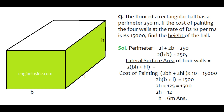In this question, the floor of a rectangular hall has a perimeter of 250 meter. If the cost of painting the four walls at the rate of rupees 10 per meter square is 15,000, then find the height of the hall. From this question, we know the perimeter of the floor, so we can write the equation: 2L plus 2B is equal to 250.